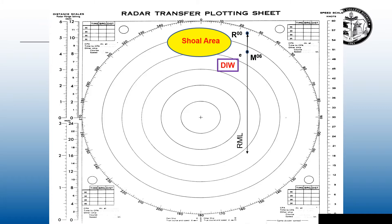We can find direction of relative motion, speed of relative motion, closest point of approach and bearing of CPA, and time to closest point of approach. Of course, the contact's true course and speed is dead in the water.